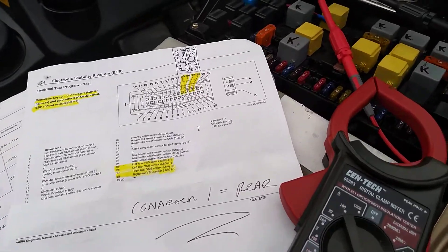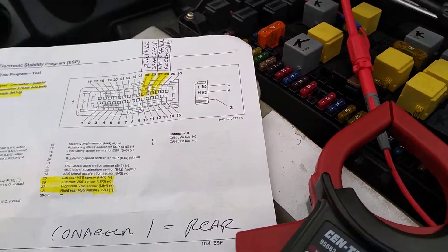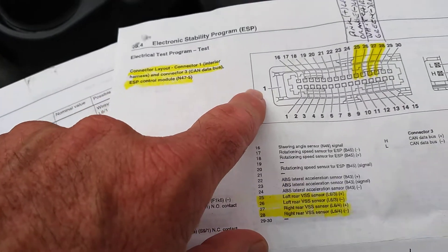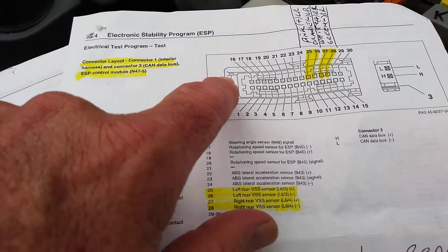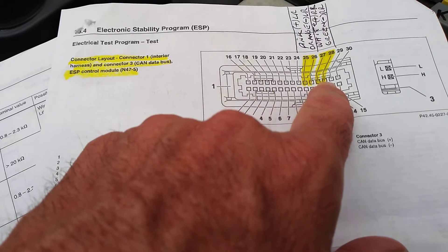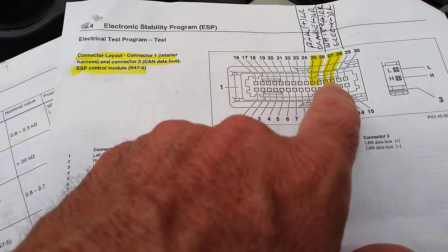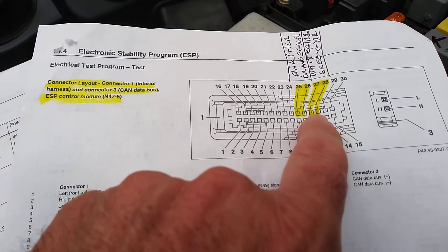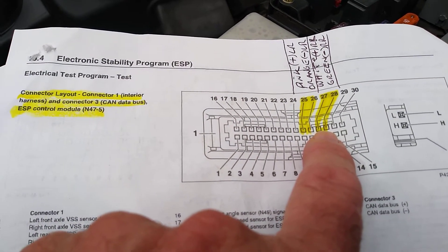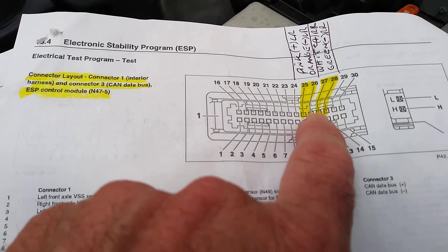I've got these two probes on the right rear wheel sensor wires. I'm on connector one, on those two pins there. 28 is green, that's the negative. You can see I made the notations above it. The next one over is white and it's positive.